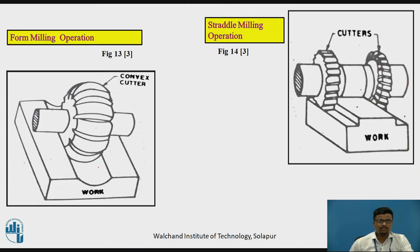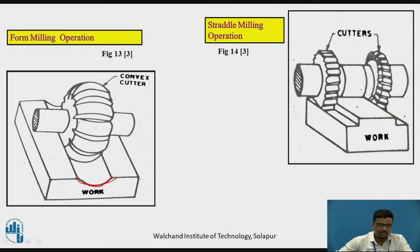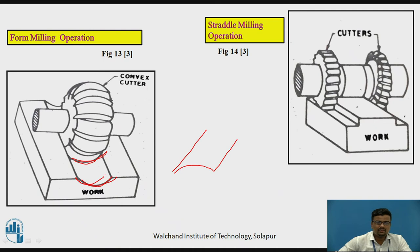For the form milling operation, the form milling cutter is used — for example, a convex cutter. The shape of the convex cutter is achieved on the workpiece, producing a convex groove. This is also called the contour milling operation. If you use a concave cutter, you can achieve a concave shape on the surface of the workpiece.